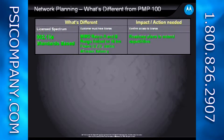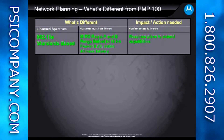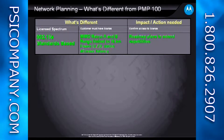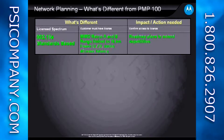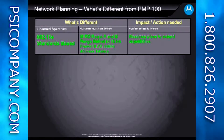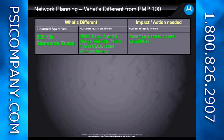This is an 802.16E-based product, so it has the features and capabilities associated with 802.16E, such as 2x2 MIMO, 40 millisecond round-trip latency, and 16 kilometer range. These are things that come along with offering a standards-based solution.